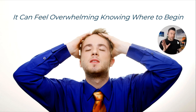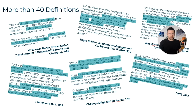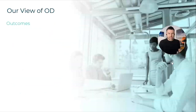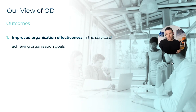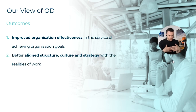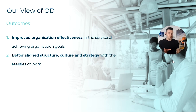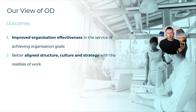So what we'll do now is help you define OD a little bit. As we said, there are over 40 definitions, and this is just a range of them. Organisation development is basically about improving organisation effectiveness in service of achieving the organisation's goals. It's about creating a more aligned organisation — aligning the structure, whether it's matrix, functional, or holacracy, with your organisation culture and strategy, all aligned with the operational reality of the organisation.